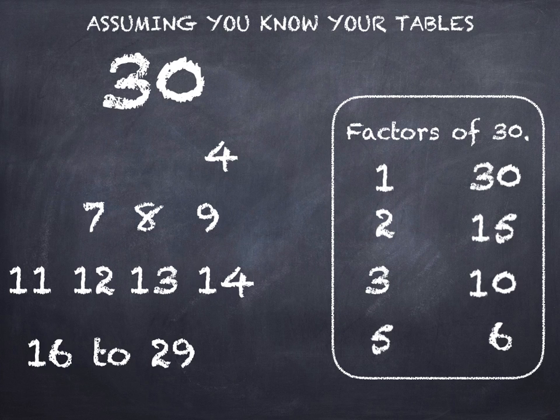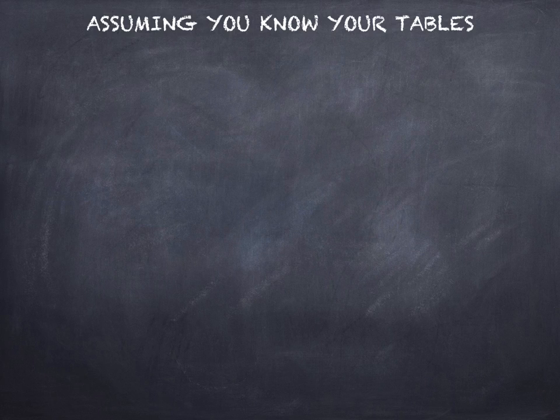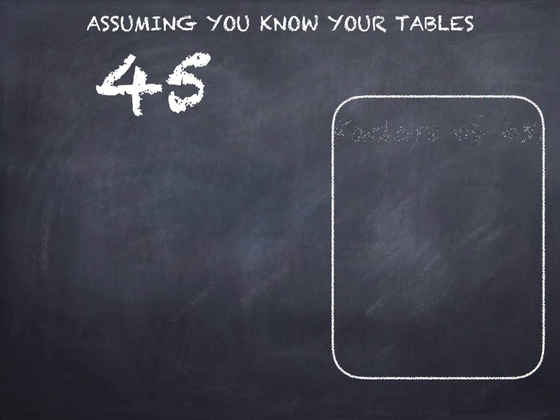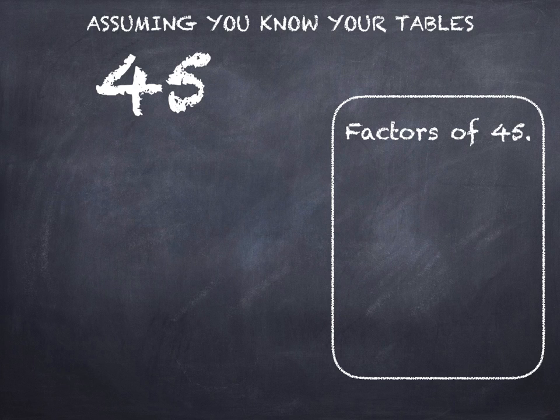One last go. This time we're looking for the factors of 45. Remember they always come in pairs. So I'm looking at pairs of numbers that multiply together to make 45. So I know 1 and 45.